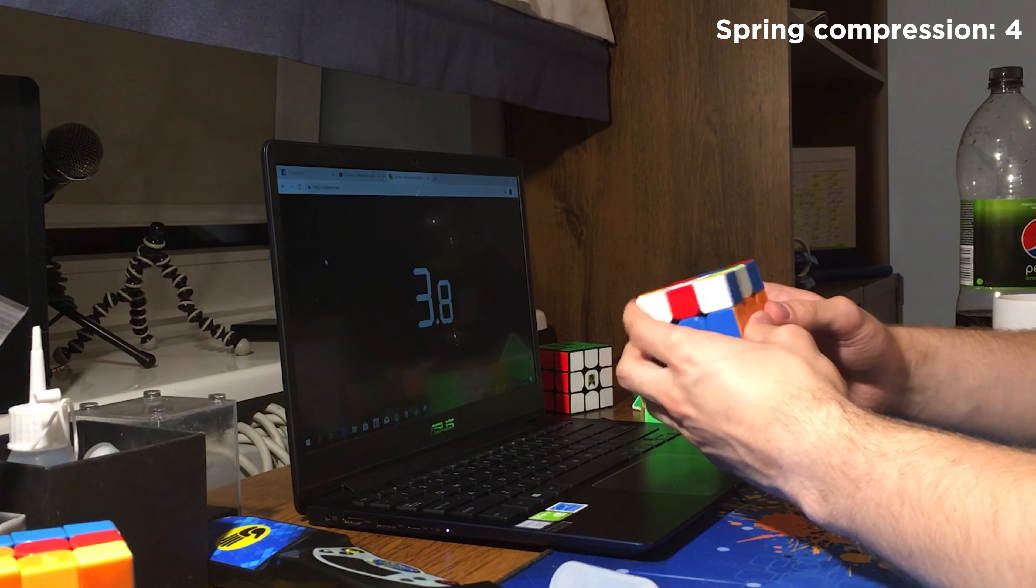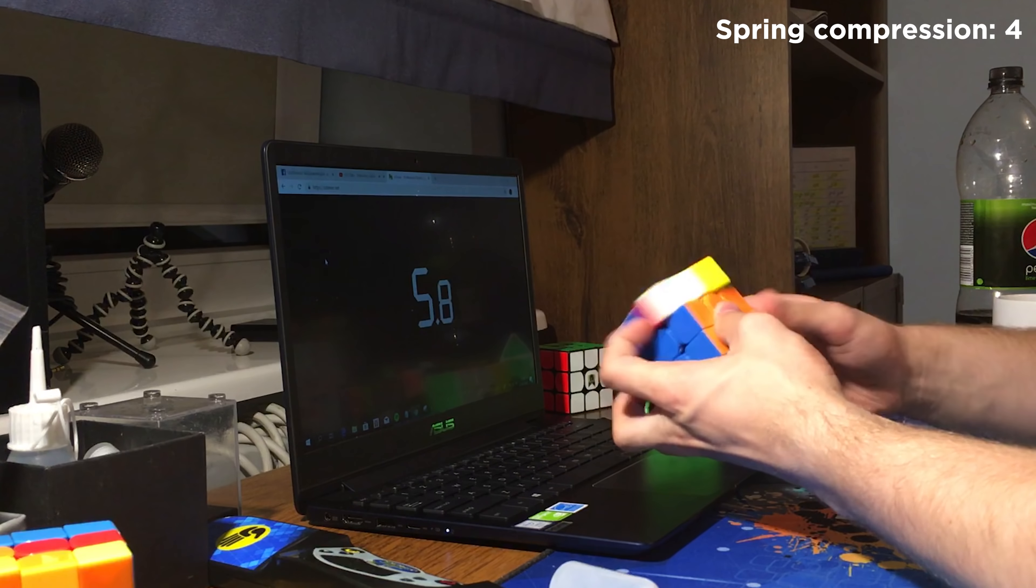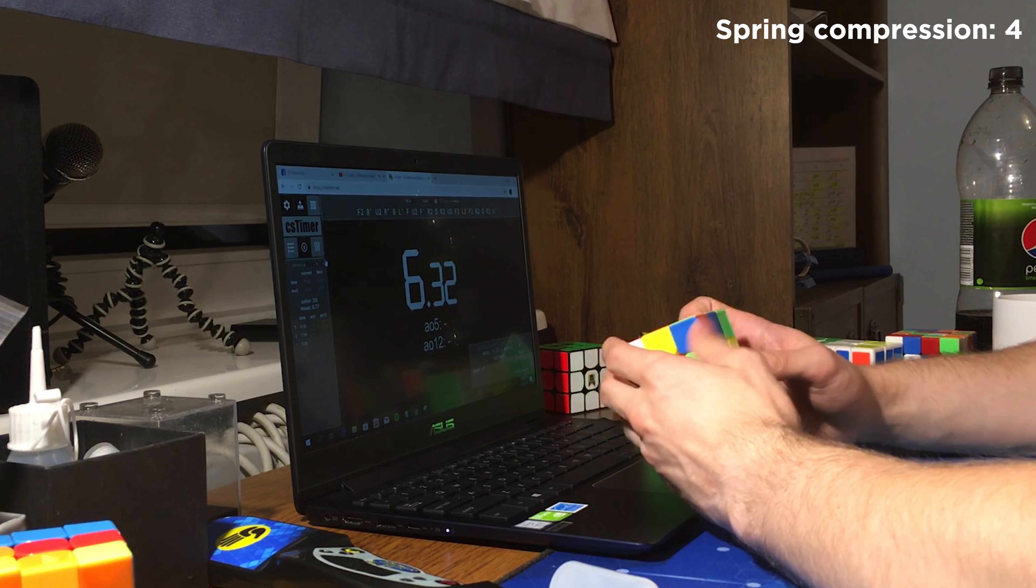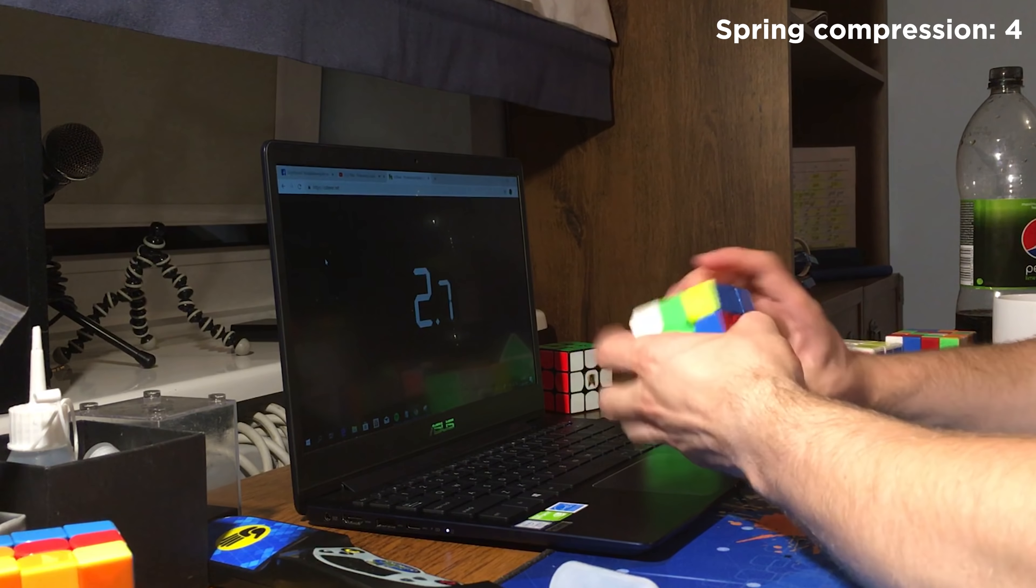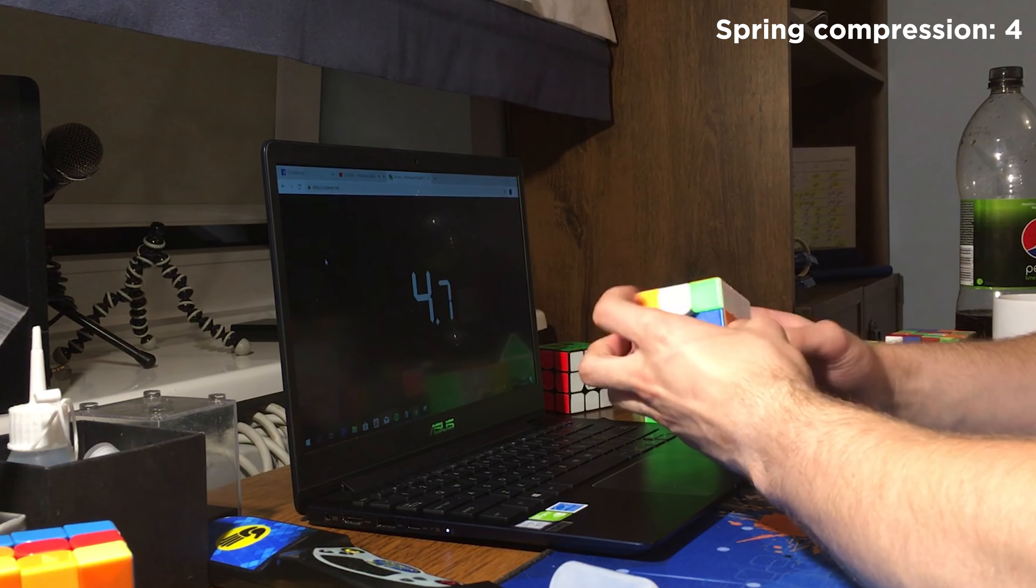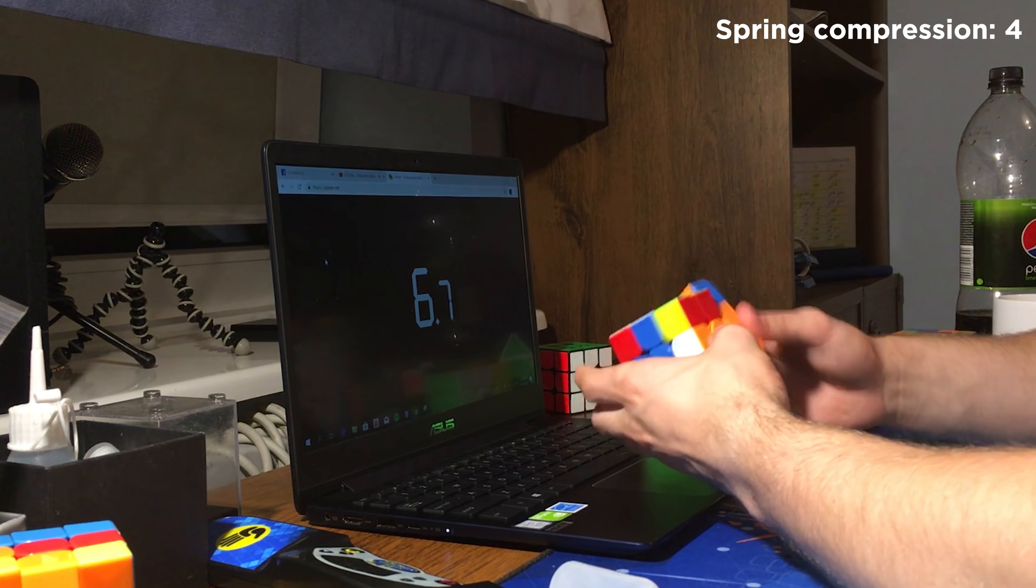Instead of using nuts to change the spring compression like in GAN cubes, you simply adjust it by using a little blue tool included with the cube. Many people don't like the ridges on the GTS3, however in my opinion they help to better grip the cube.